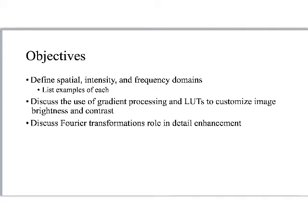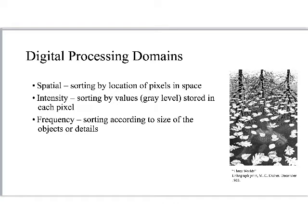We'll talk about Fourier transformations and how they're used in enhancement. I wanted to bring up the artwork of MC Escher — I'm a fan. This image is relevant because we're talking about different digital processing domains: spatial, intensity, and frequency. In this image we have three different worlds represented: the world where the trees exist above the water, the world on the surface of the water where the leaves are resting, and the world below the surface where the fish is. All three domains are represented in a single image.